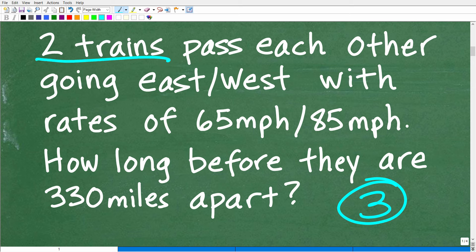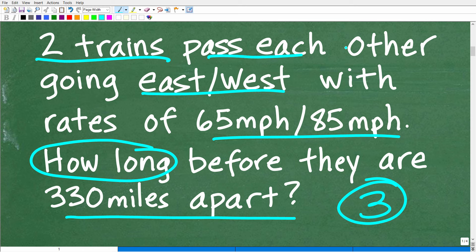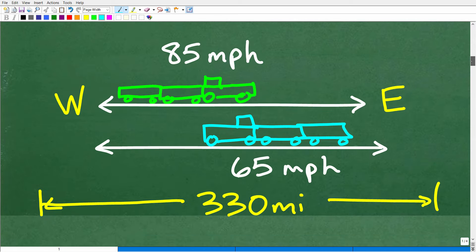So read the problem at least three times and this particular problem, there's kind of a lot going on here, right? Got two trains, one's going east, one's going west and they have different speeds and we need to kind of figure out how long, right? We're looking for time before these trains are 330 miles apart. And it's certainly, we have to consider that they are passing one another. So what does this all mean? Well, the best thing that we can do here is model this situation. You always want to try to model a word problem so you can visualize a problem. That's going to really help you see the solution as well.